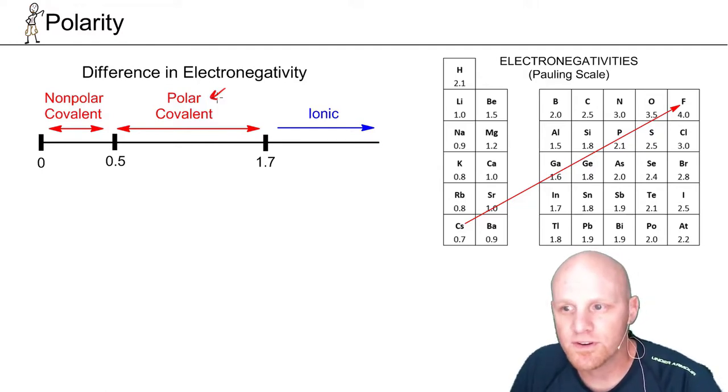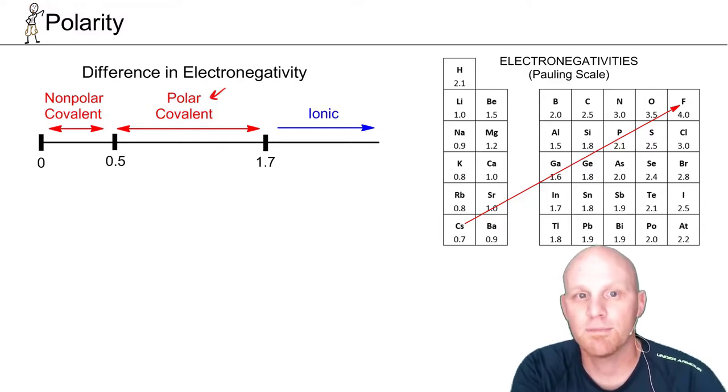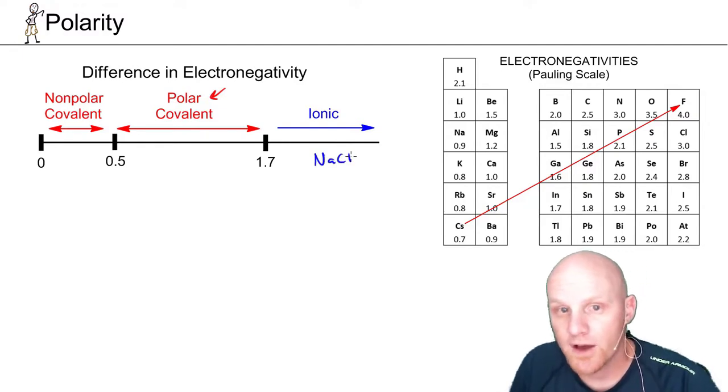And if we look at difference in electronegativity, that actually is what's going to determine whether a bond is non-polar covalent, polar covalent, or ionic. Back in Gen Chem we might have just simply told you that if you've got a metal and a non-metal, like NaCl, that's going to be ionic.